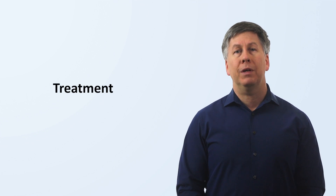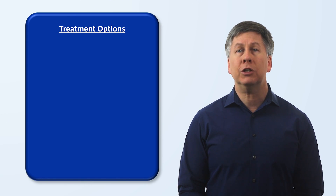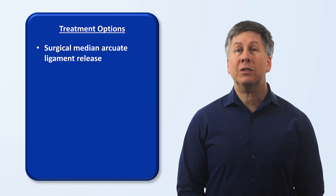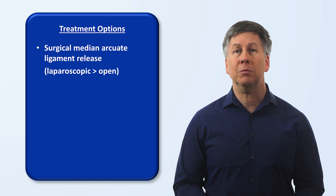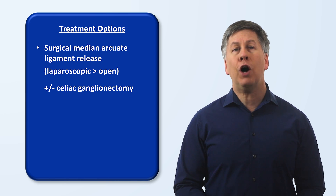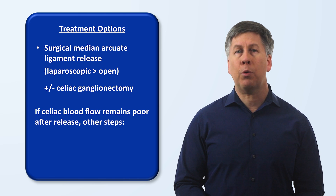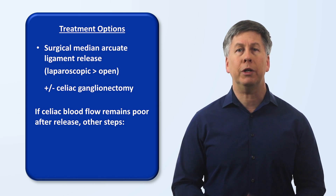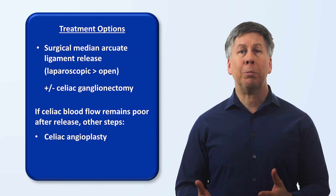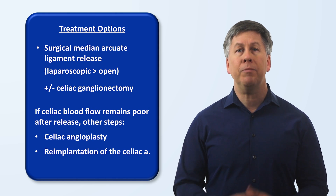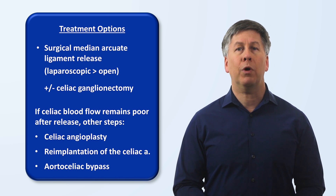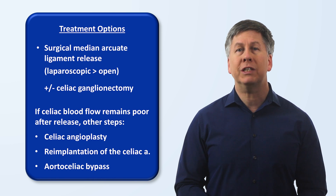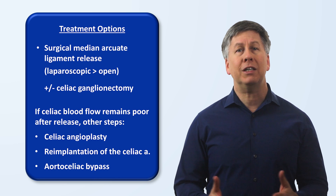MALS is fundamentally an anatomic disease, so treatment is surgical. The specific procedure performed in most patients is called a median arcuate ligament release, and a laparoscopic approach is generally favored over open. Due to concern that involvement of the celiac plexus contributes to symptoms, a celiac ganglionectomy is often performed at the same time. If celiac blood flow remains poor after release — which can be assessed during the initial surgery — additional steps include celiac angioplasty, re-implantation of the celiac artery into the aorta, or aortoceliac bypass. It is currently unknown whether performing these additional revascularization procedures results in better outcomes than just the initial release and ganglionectomy.